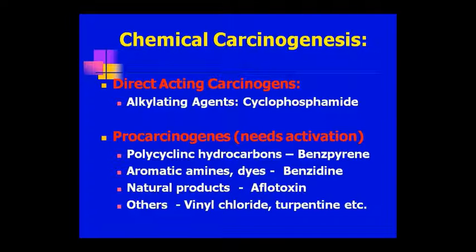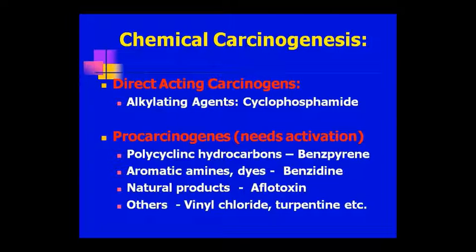The second type is cancer-causing agents which do not cause cancer until they are activated — they exist in an inactive state. After metabolic activation they become carcinogenic. These compounds include four groups: polycyclic hydrocarbons such as benzo[a]pyrene, aromatic amines, dyes such as benzidine, and natural products like aflatoxin. These are chemical carcinogens that can be activated and can cause cancer.